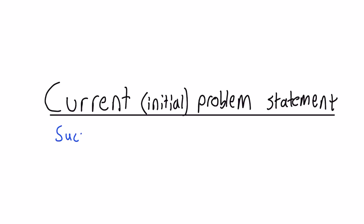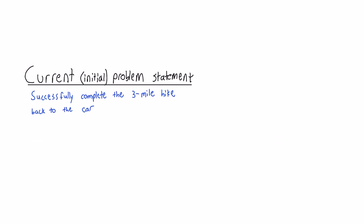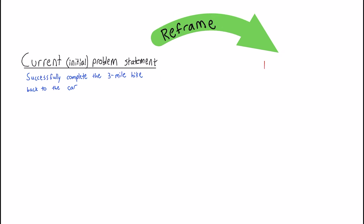Currently, the problem is stated as follows: successfully complete the three-mile hike back to the car. Now, we could explore the causes of this problem using vertical and lateral thinking, or we could reframe the problem. I'm going to reframe the problem by asking one simple question: how can the hiker get to their car without hiking three miles back?